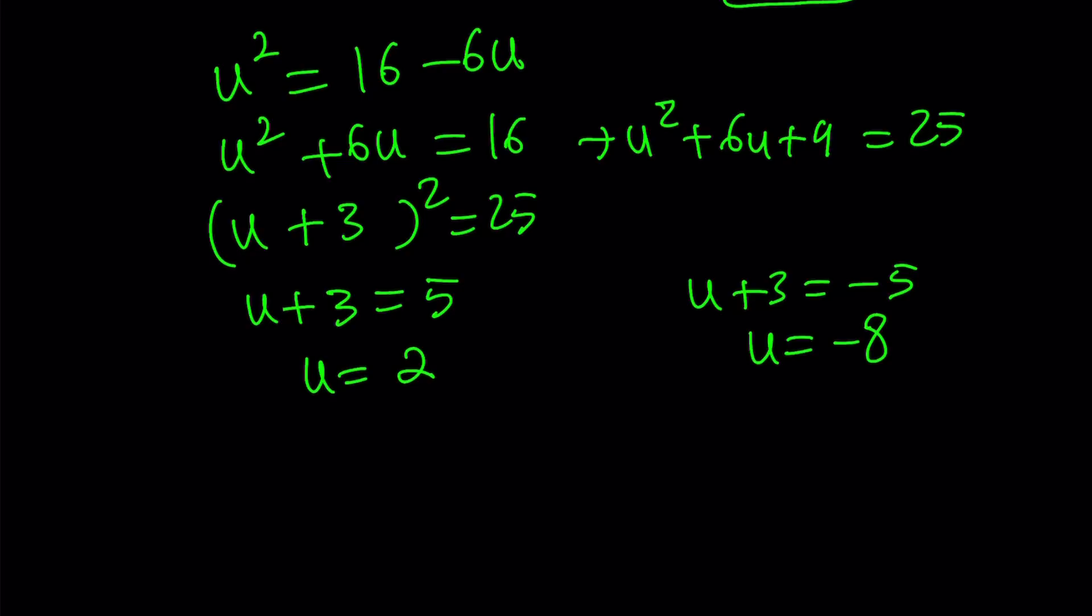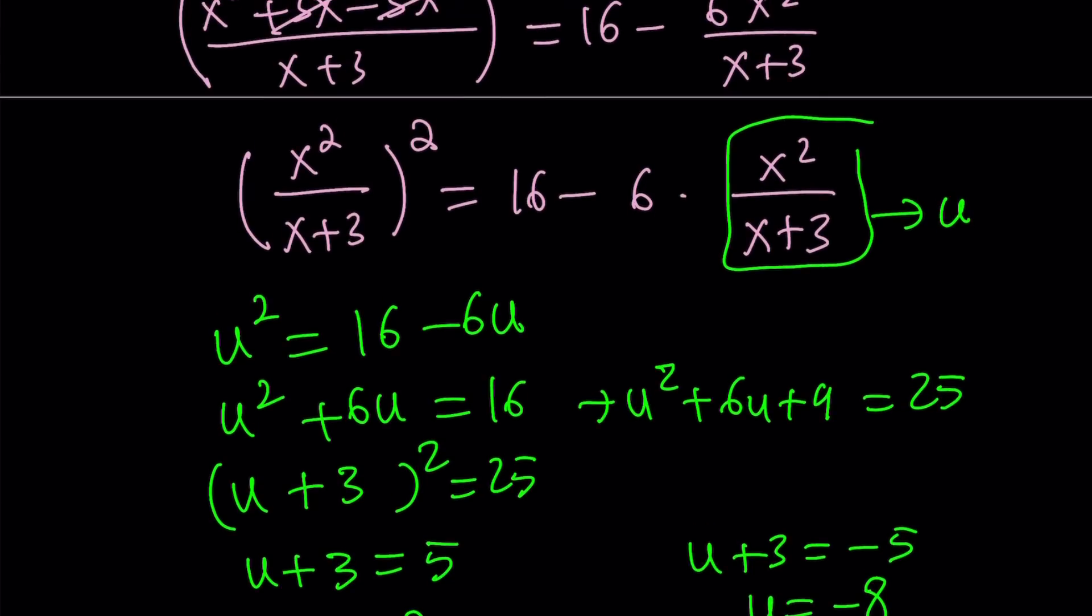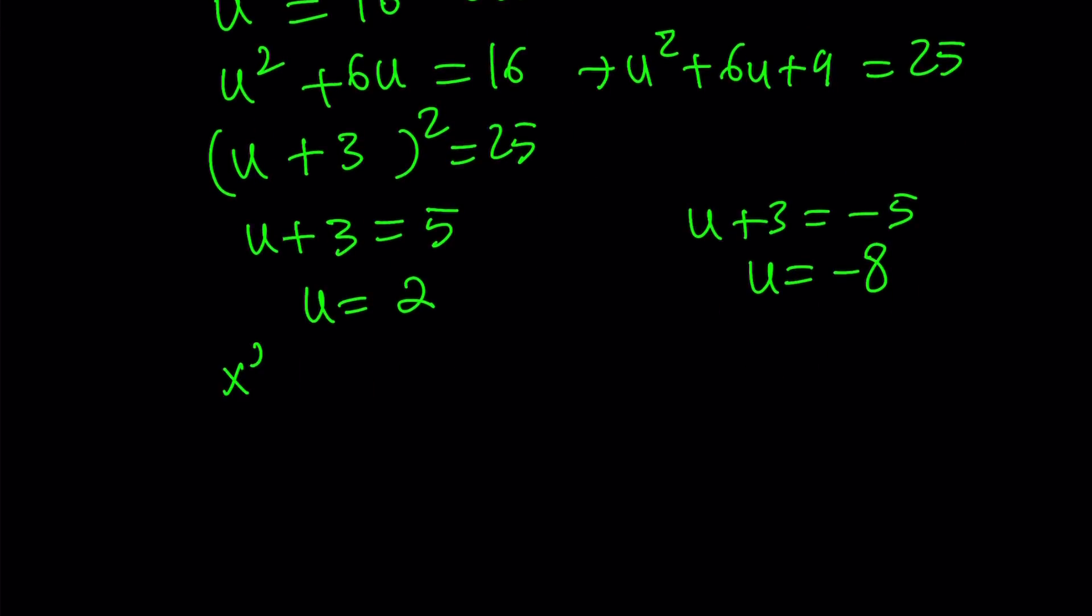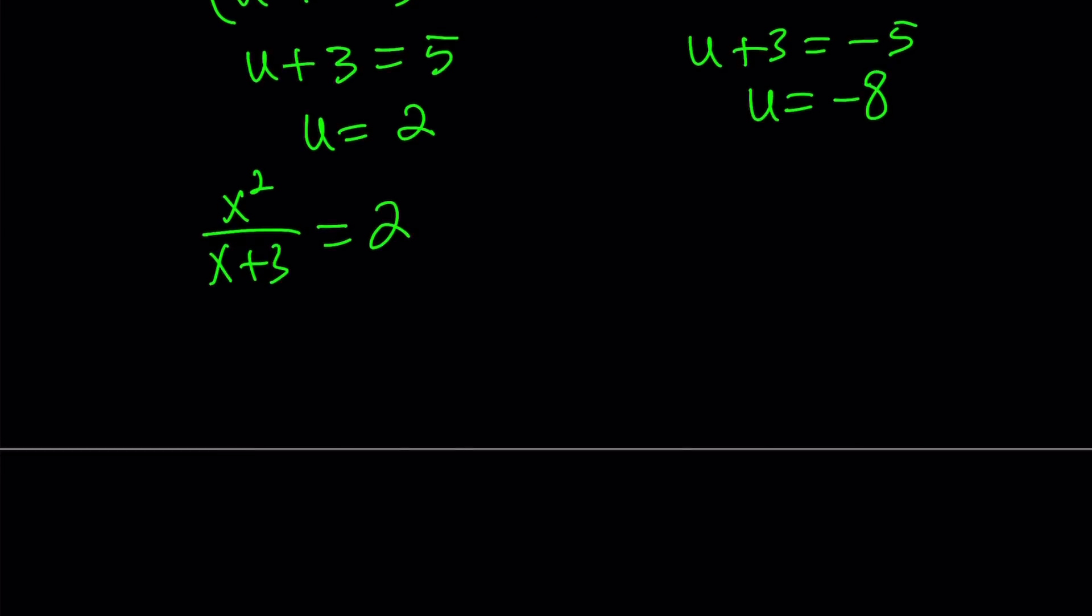After finding the u values, we must back substitute. What is u? x squared over x plus 3. Let's go ahead and back substitute that. And by just cross multiplication, we get x squared equals 2x plus 6 or x squared minus 2x minus 6 equals 0. So that's a quadratic equation.